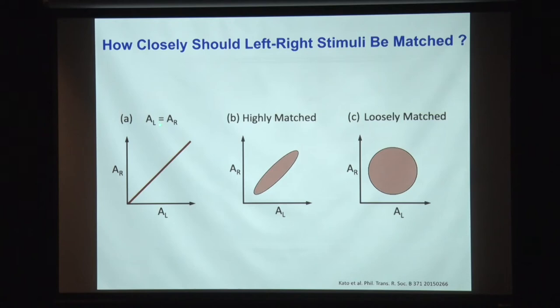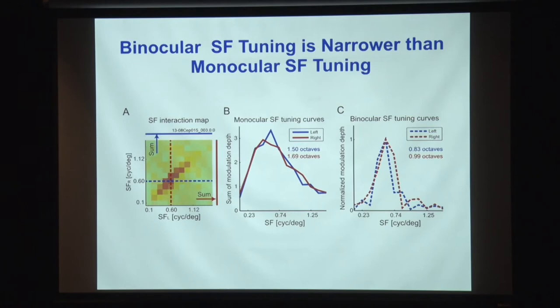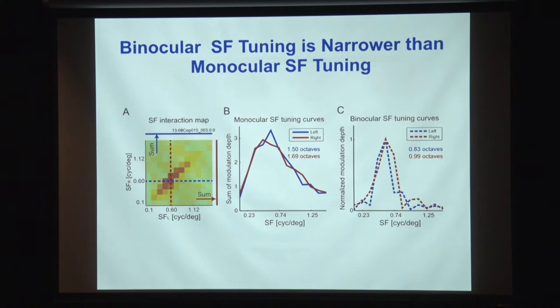If you project that map onto the horizontal and vertical axes, you get the monocular tuning curve. If you cut across this domain horizontally and vertically, you get the binocular spatial frequency tuning curve — essentially the matching requirement for left and right spatial frequencies. This is much narrower than the monocular tuning curve — it's generating a really narrower matching requirement than the monocular receptive field defined spatial frequency allows.